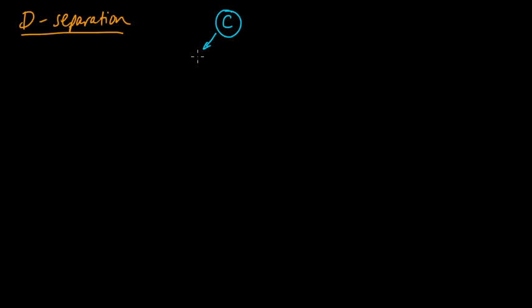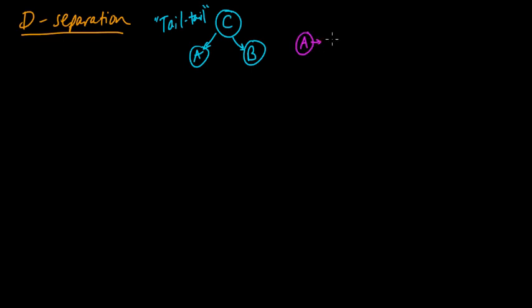In the last couple videos, we looked at three special little cases involving three random variables A, B, and C. We looked at the case where A and B are conditionally independent given C — the tail-to-tail relationship. And we had another one where A goes to C goes to B, which was a head-to-tail or tail-to-head type of relationship.